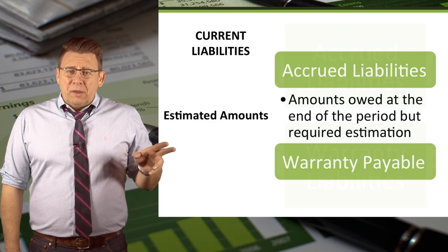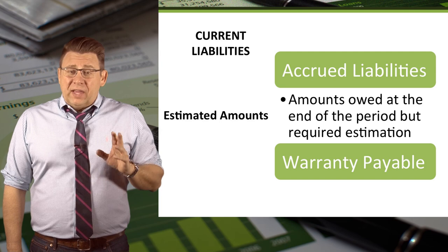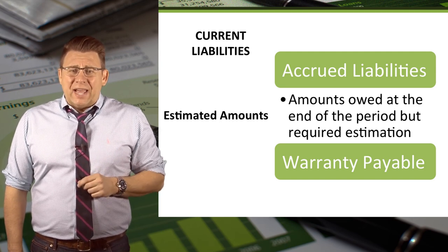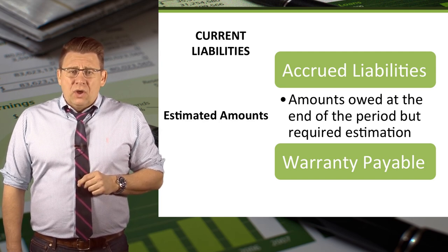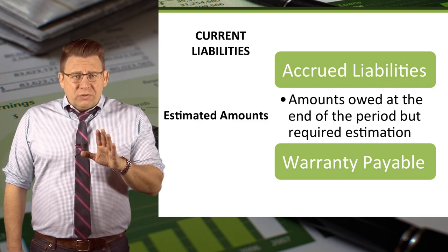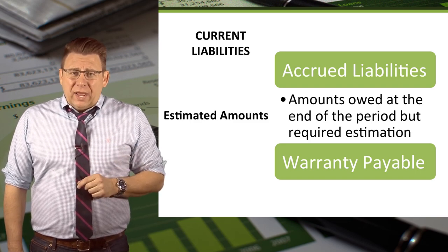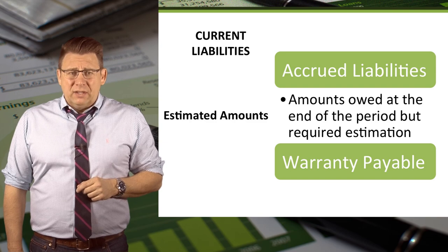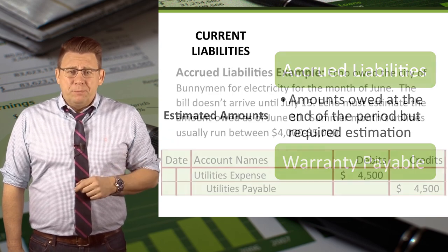Accrued liabilities are amounts owed at the end of the period, but a company doesn't know the exact amount. Not knowing the amount doesn't make the liability go away, so the liability has to be estimated. Let's look at an example.